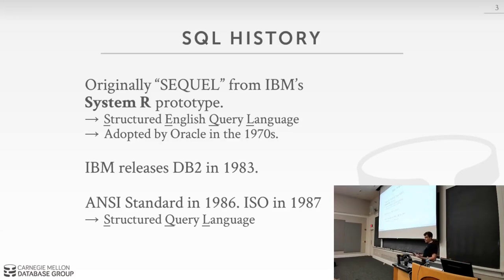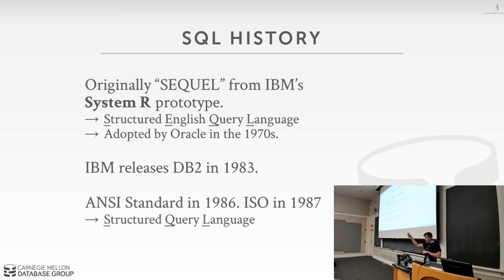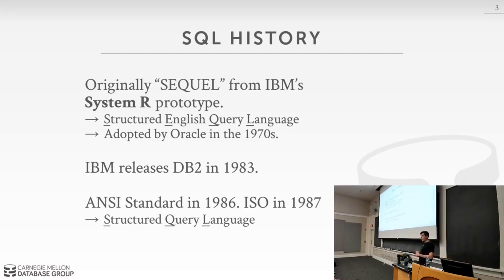At IBM they came up with SEQUEL as part of the System R project, one of the first relational database systems being built in the 1970s. The other major one was Ingres, from Berkeley. Postgres was invented by the same person who did Ingres — it's called 'post-Ingres.' The Ingres team had their own language called QUEL, developed by one of my advisors Mike Stonebreaker, who claims it was much better than SEQUEL. But most of you have never heard of QUEL — IBM won.